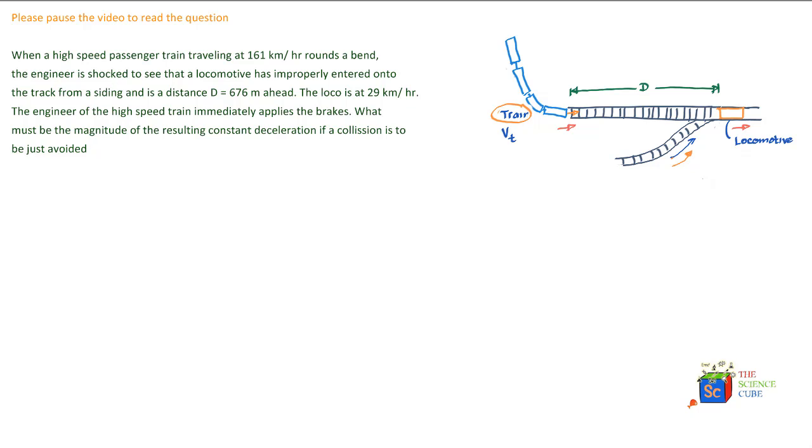You must realize that if the driver is just to avoid collision with the locomotive, at the time just before the collision when the train is on the rear side of the locomotive and about to touch it, its velocity should be the same as that of the locomotive. That's when the collision will not happen.